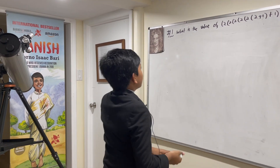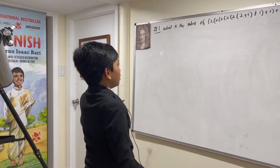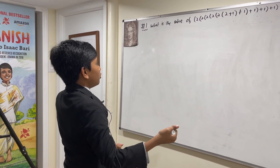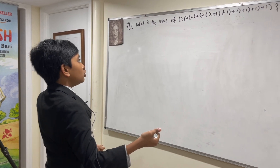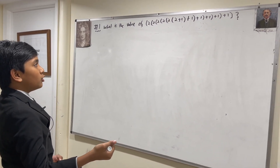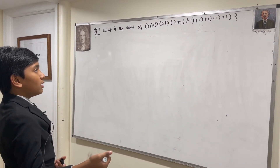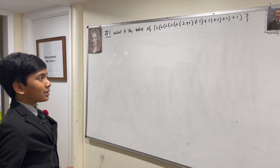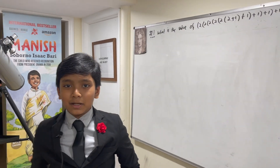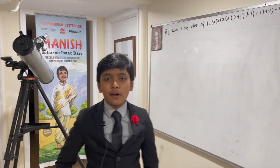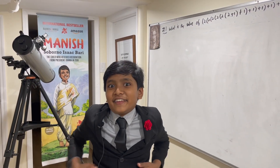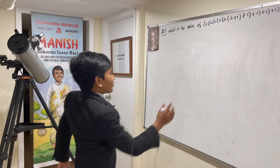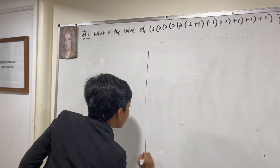Number 1. What is the value of 2 times 2 times 2 times 2 times 2 times 2 plus 1 plus 1 plus 1 plus 4 plus 1? This is a problem with a lot going on, so let's cover two ways to solve it.